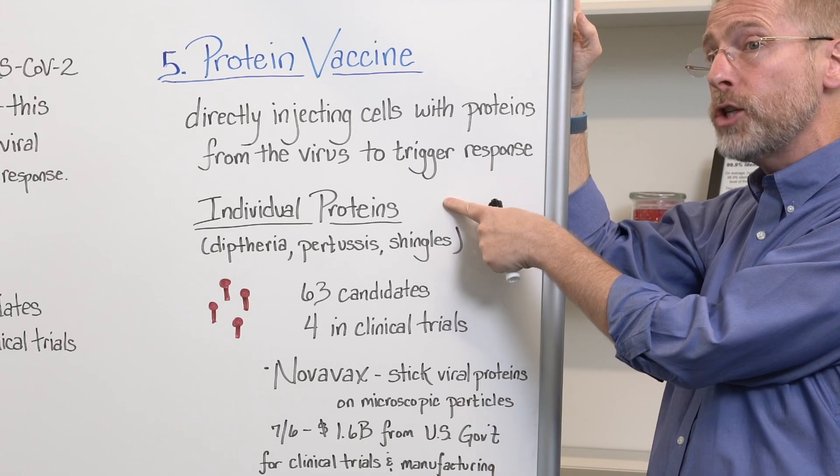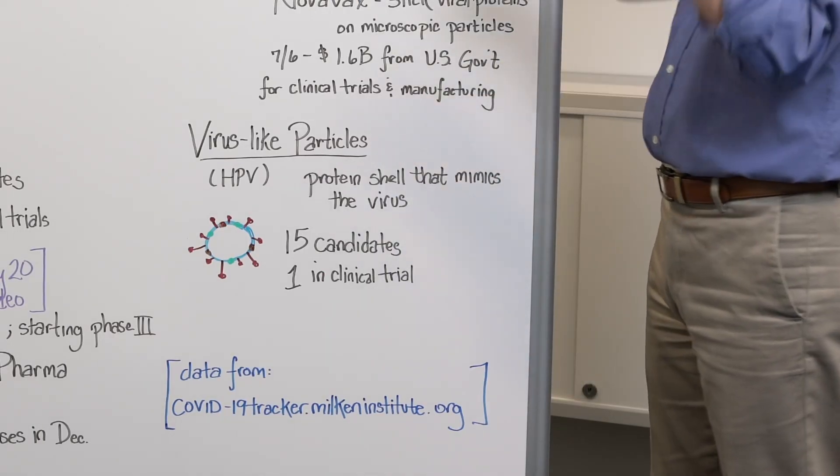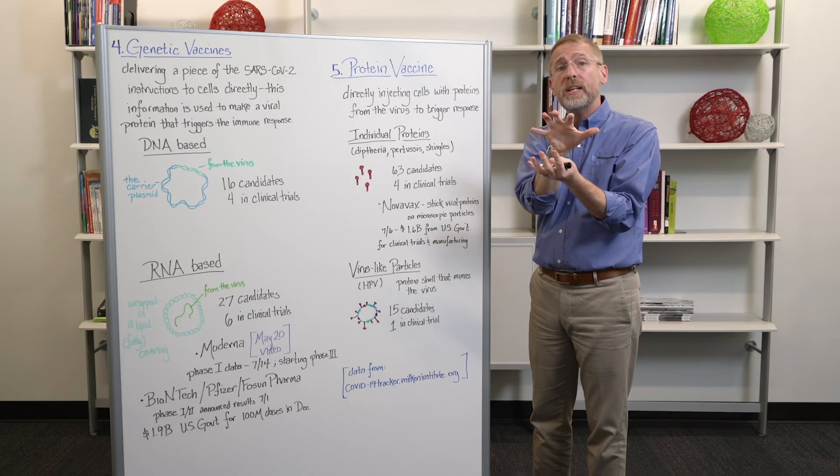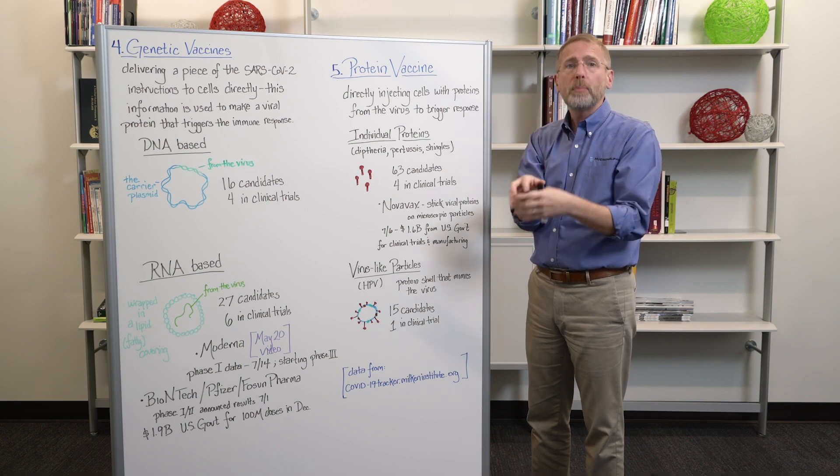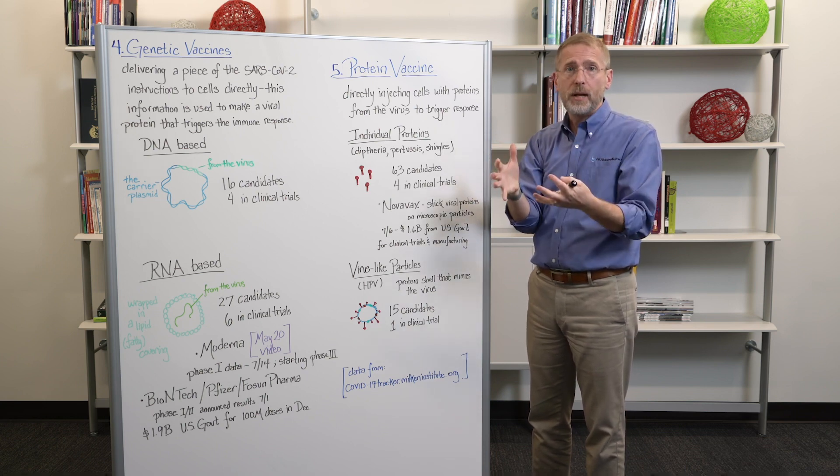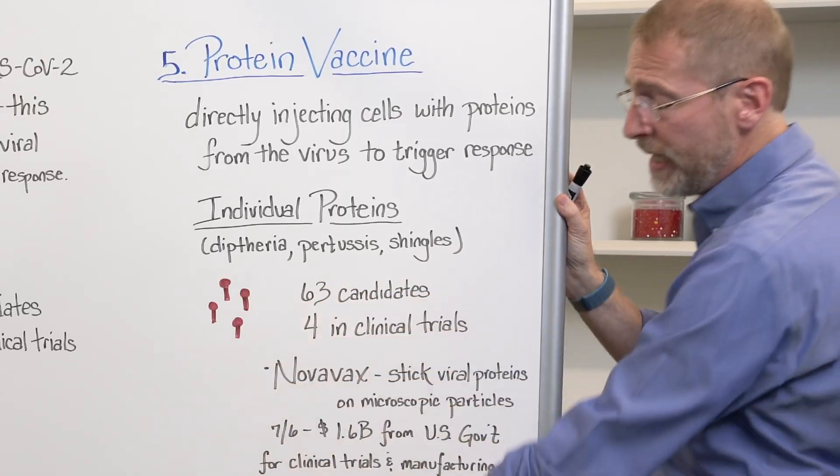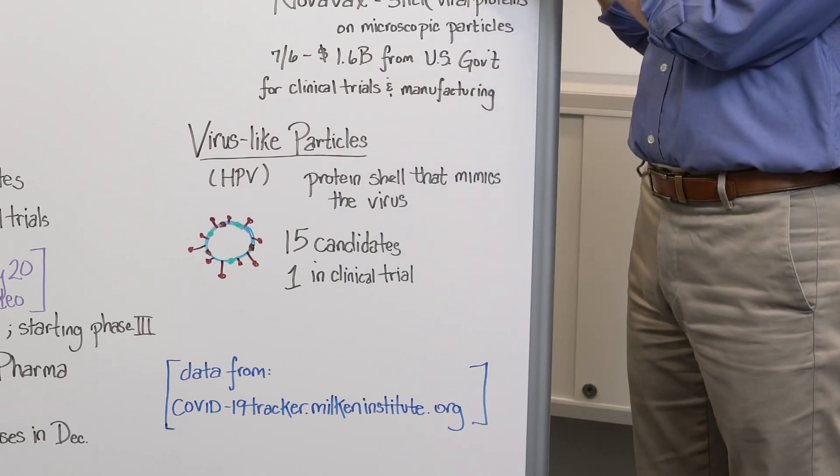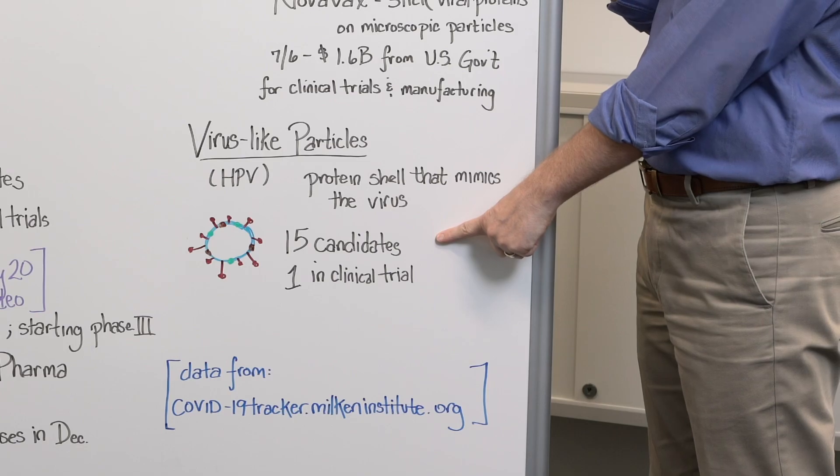I could inject individual proteins or I could inject what are called virus-like particles, which is essentially a shell of all the proteins in SARS-CoV-2, but it has no genetic material so it can't actually replicate and infect the cells. But either way, I'm injecting either bits of protein like the spike protein or the larger shell.